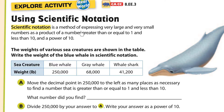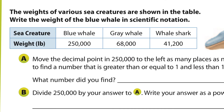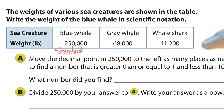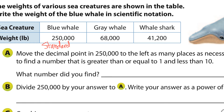Don't worry, this will make more sense in a little bit. So we have this example where the weights of various sea creatures are shown in a table. Write the weight of the blue whale in scientific notation. Here's the blue whale. This is called standard notation — that's what you're used to seeing. We're going to rewrite 250,000 in scientific notation. It's the exact same number just written a different way.